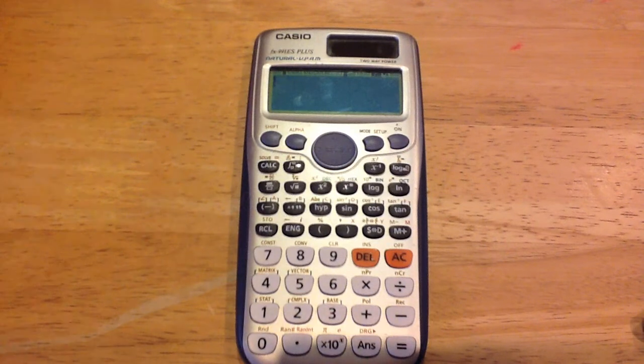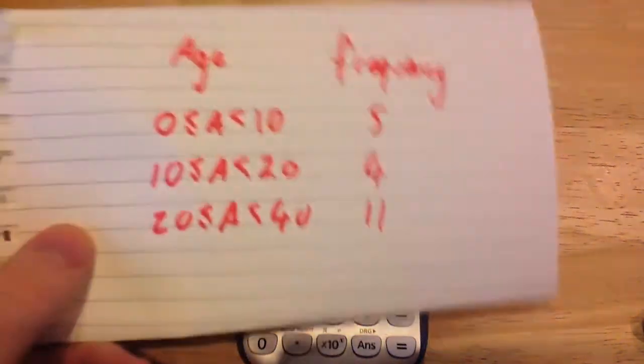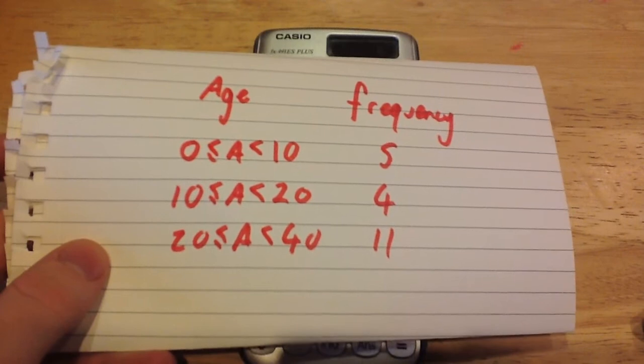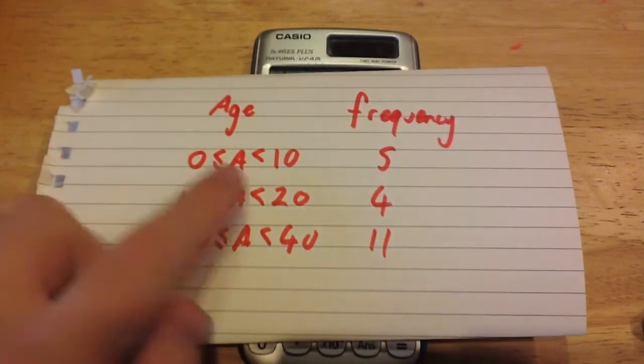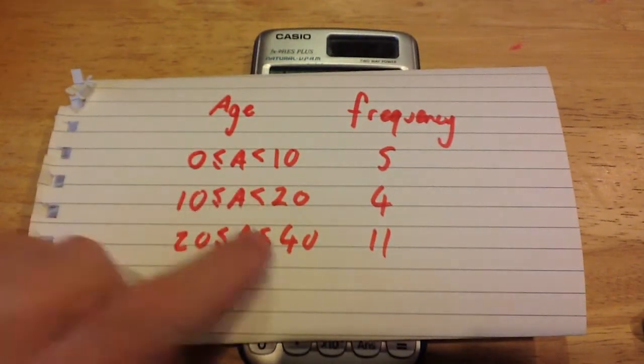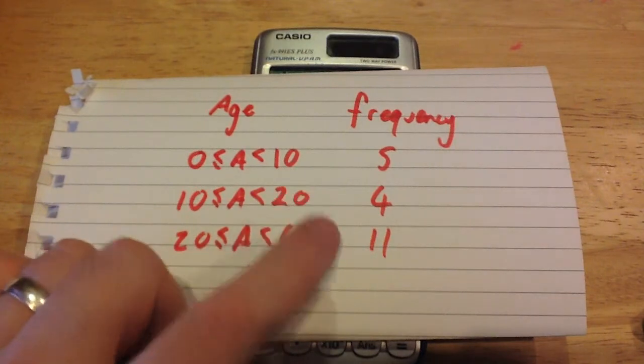In this video we're going to look at how to use your Casio calculator to work out the mean for a grouped frequency table such as this, where we've got age 0-10, 10-20, and 20-40, and we've got the frequencies 5, 4, and 11.